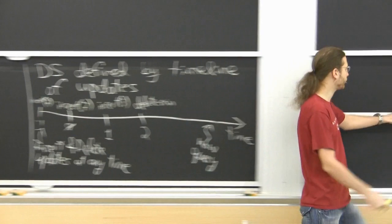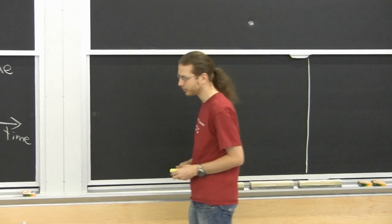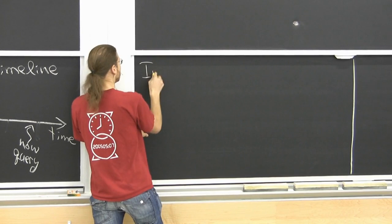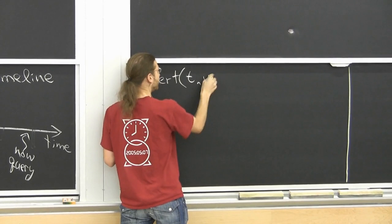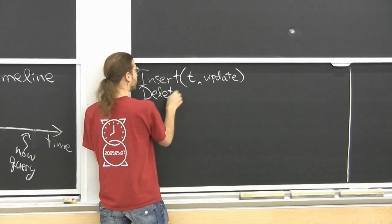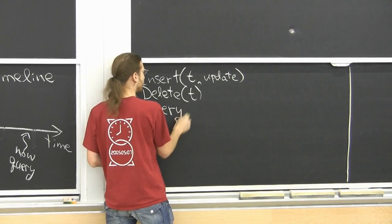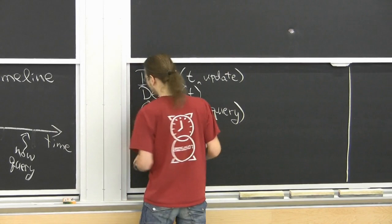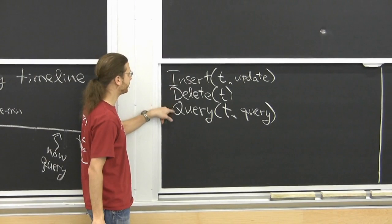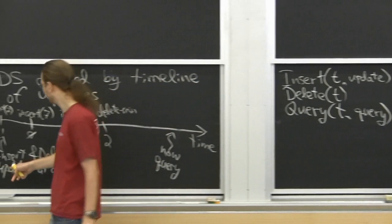Like persistence, we have partial and full retroactivity. In general, we're going to have: Insert at a given time with a given update; Delete the operation at a given time; and Query. I'll use capital letters to denote retroactive operations and lowercase letters to denote regular operations — so capital I Insert is a retroactive insert of a lowercase insert.